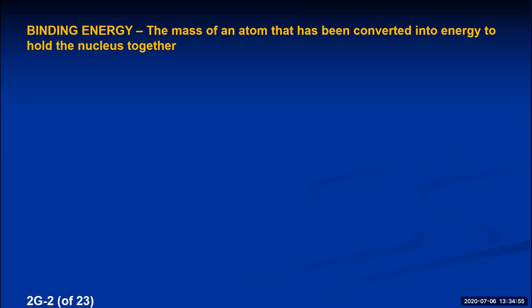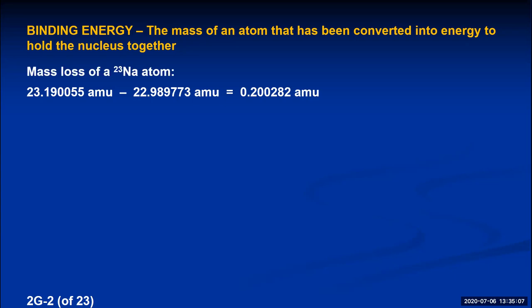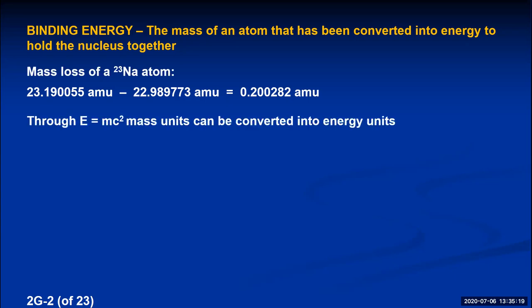We can calculate the mass loss of the sodium-23 atom by taking the theoretical mass minus the measured mass, giving a mass loss of 0.200282 atomic mass units. Using E = mc², we can convert mass units into energy units. It turns out that 1.000 atomic mass unit is equivalent to 1.492 × 10⁻¹⁰ joules of energy. This is a conversion factor between a mass unit and an energy unit using Einstein's equation.